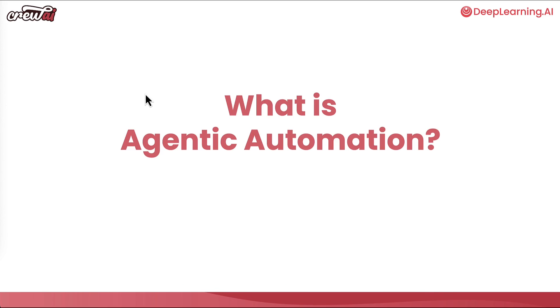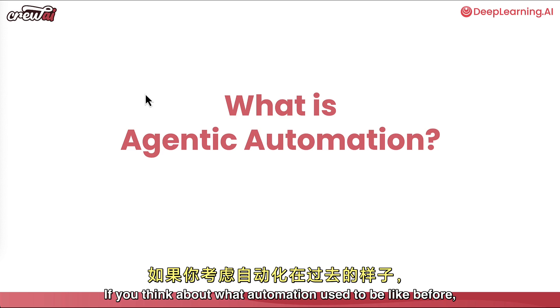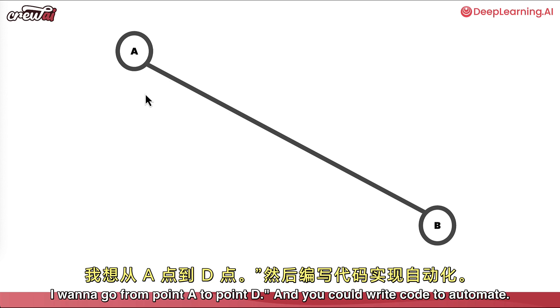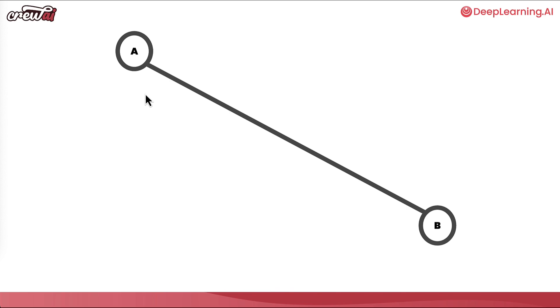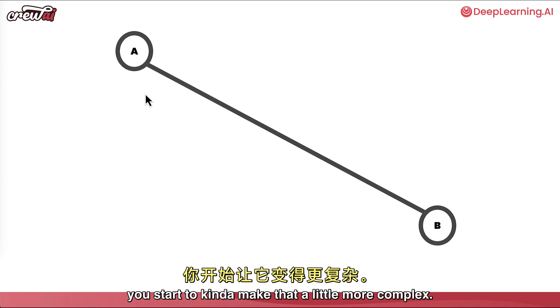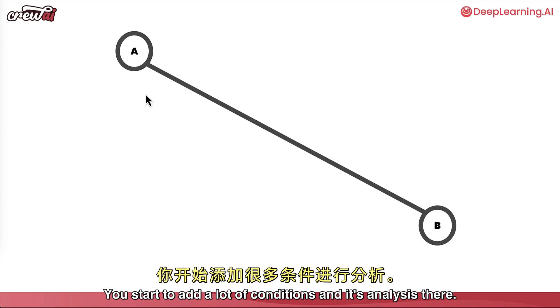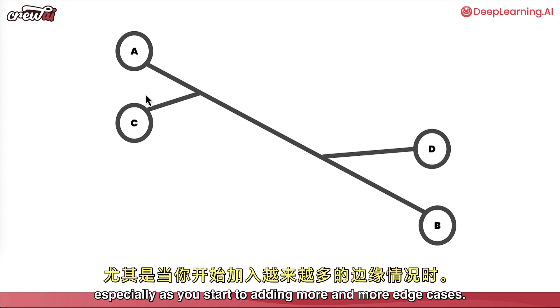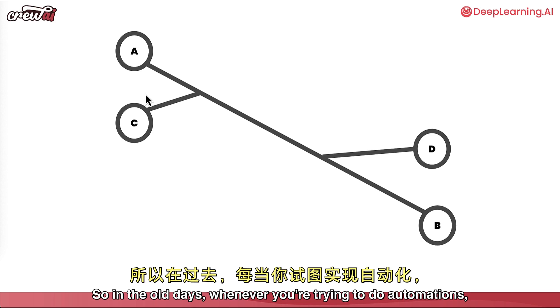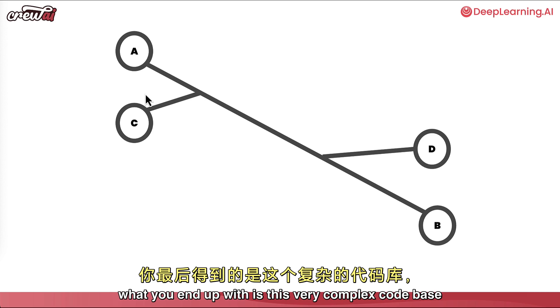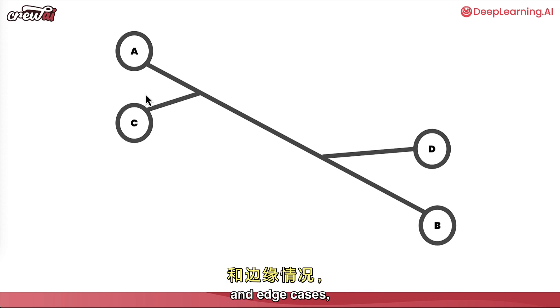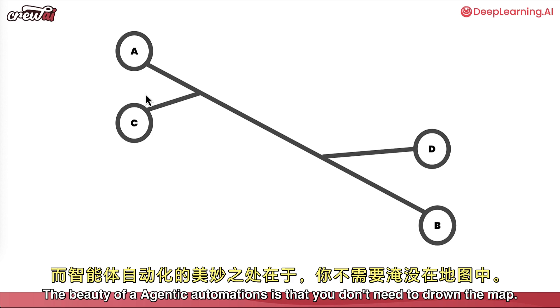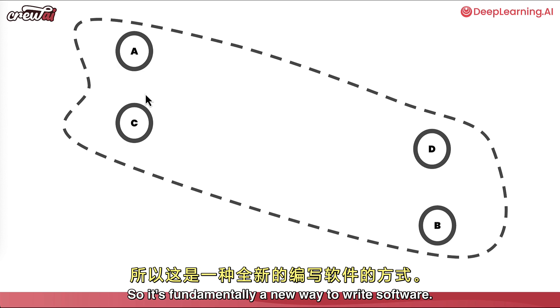So what is agentic automation? If you think about what automation used to be like before, it was something completely different. In the past, you'd write code to go from point A to point B, and as edge cases appeared, you'd make it more complex — adding conditions, ifs, and elses. Things can become quite complex as you add more edge cases, and you can never cover them all. The beauty of agentic automation is that you don't need to map it all out — you can just show the options. It's fundamentally a new way to write software.